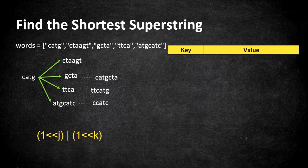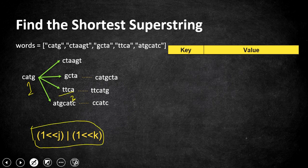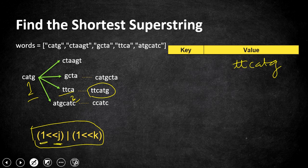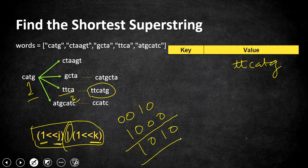For example, merging strings 1 and 3: we shift 1 left by 1 giving binary 0010, and shift 1 left by 3 giving binary 1000. Performing an OR operation gives 1010, which converts to integer 10. So 10 is our key, meaning we combined and merged string 1 and string 3 to get this answer. The key 10 in binary represents exactly which strings were combined.